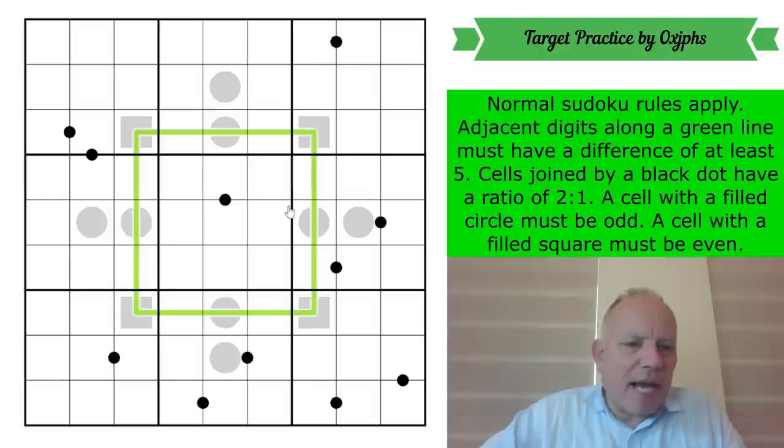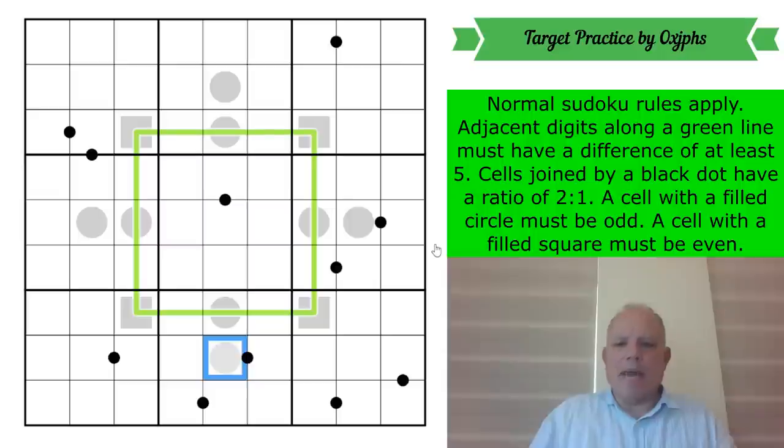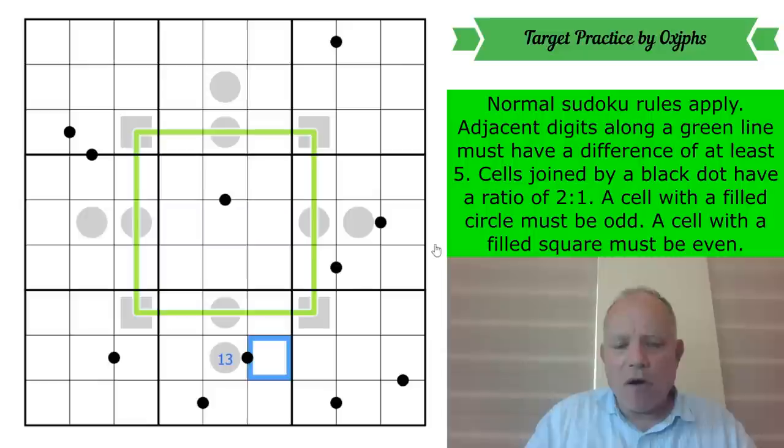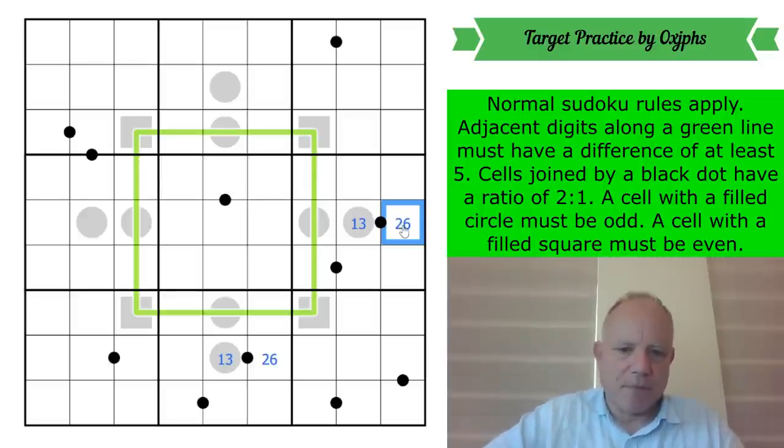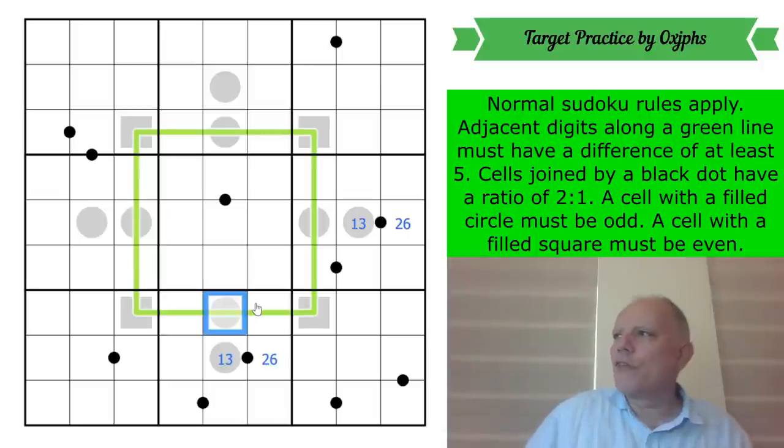Don't know whether to start with the black dots or the whisper. Let's try this cell. This cell is odd, but it's on a black dot. So the six digits that can go on black dots that can have a partner that is a Sudoku number that is either half or double them are one, two, three, four, six, eight. Now you have noticed that only two of those are odd and they are one and three. Their partners on the black dot would be two or six. There's another gray circle on a black dot there. So the same conditions apply.